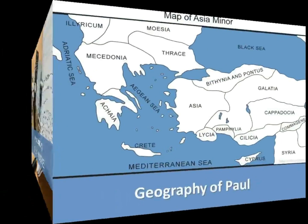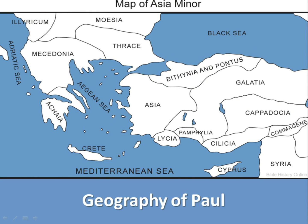We're going to begin this topic with a map. This is a map of Asia Minor, and the section we're studying tonight is the geography of Paul. The general provinces of Asia Minor are areas we're going to talk about, and we'll cover the three missionary journeys of Paul. I would encourage you to write these down or at least replay this video and try to memorize these.